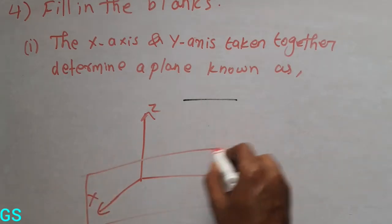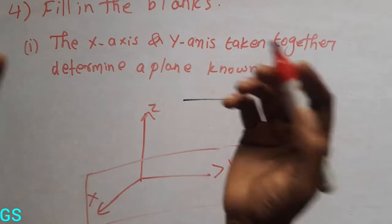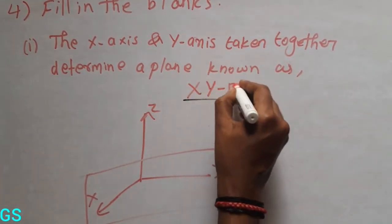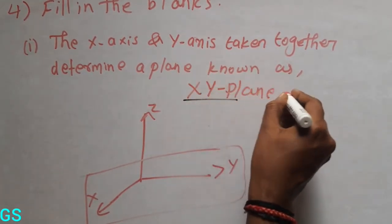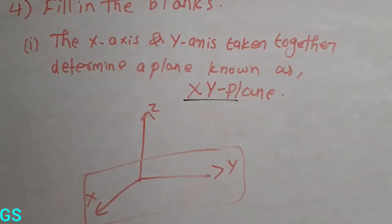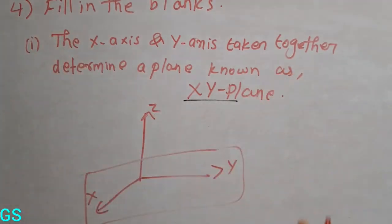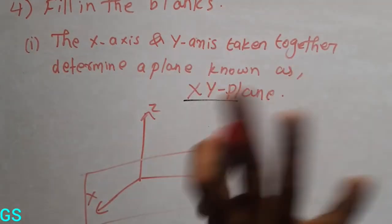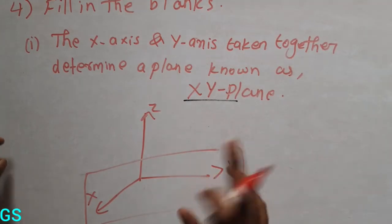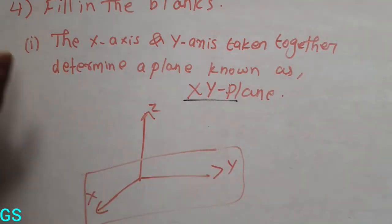This is the X axis and Y axis — this is a plane. If you want to write plane, that's why it is a plane. The XY plane is the answer. This is X axis and Y axis — do you see the XY plane? Together, Z is not available; XY is available. Next is a 2-mark question — you can use the comments for doubts.